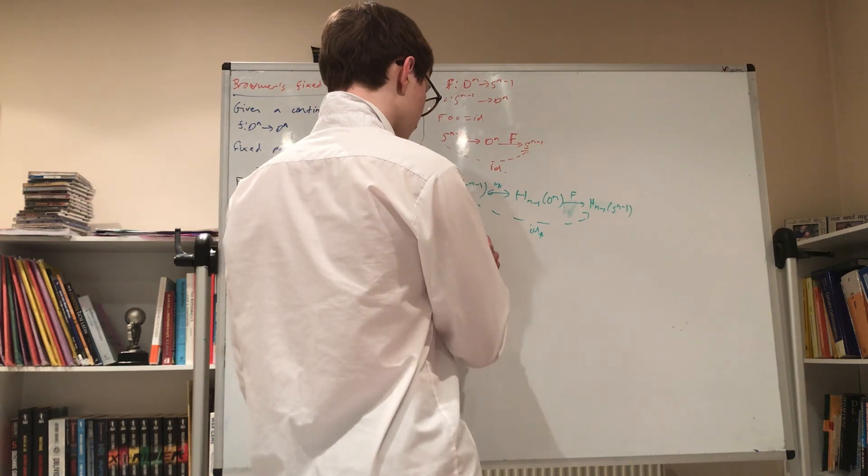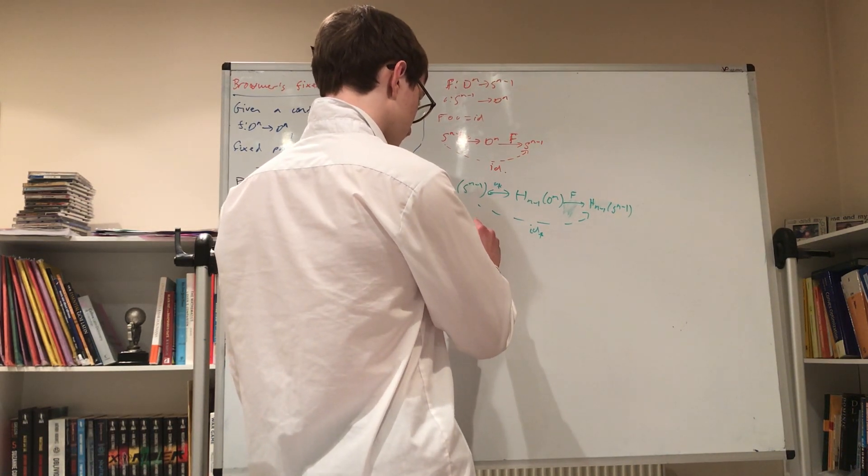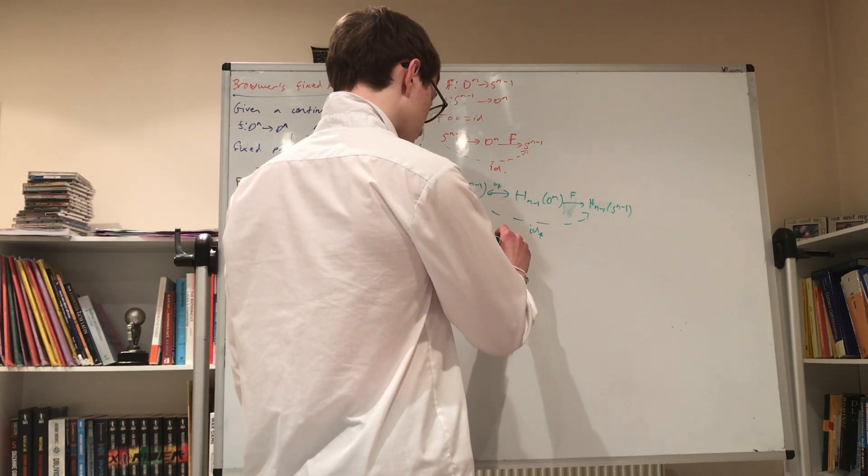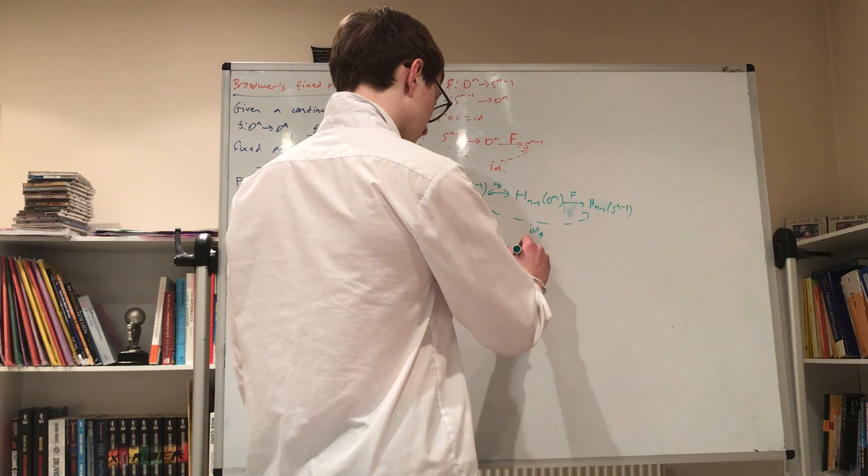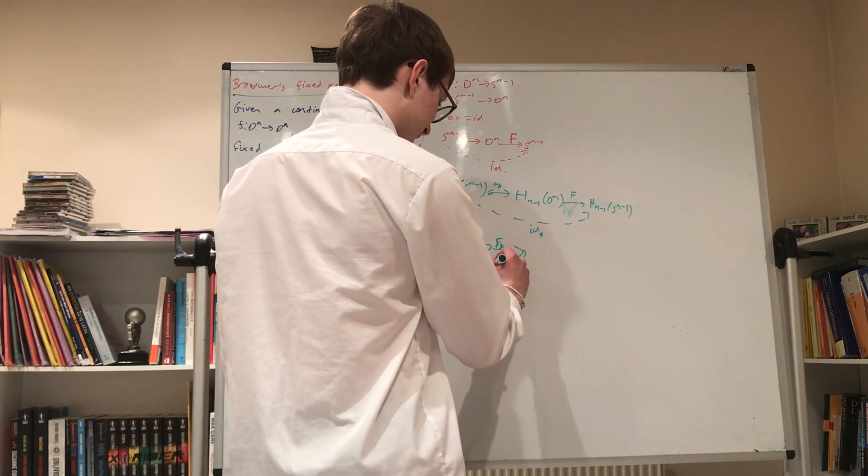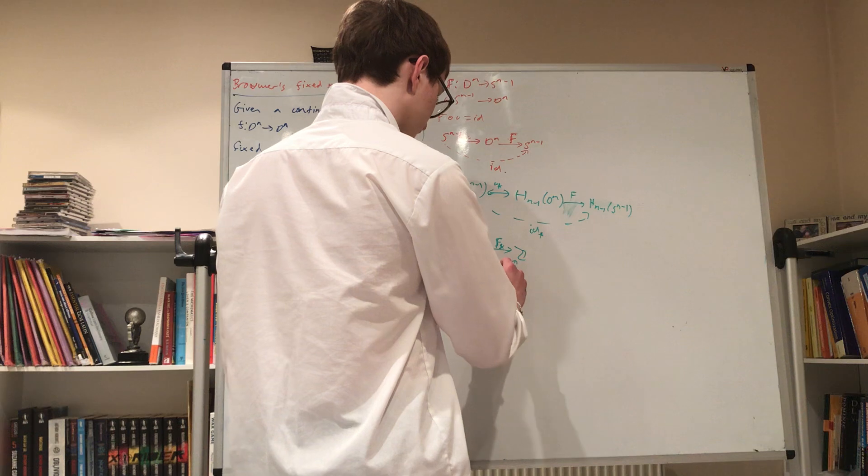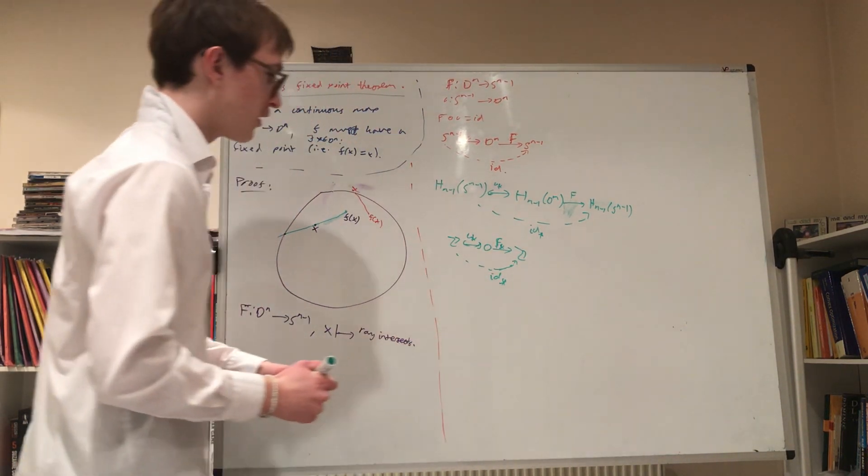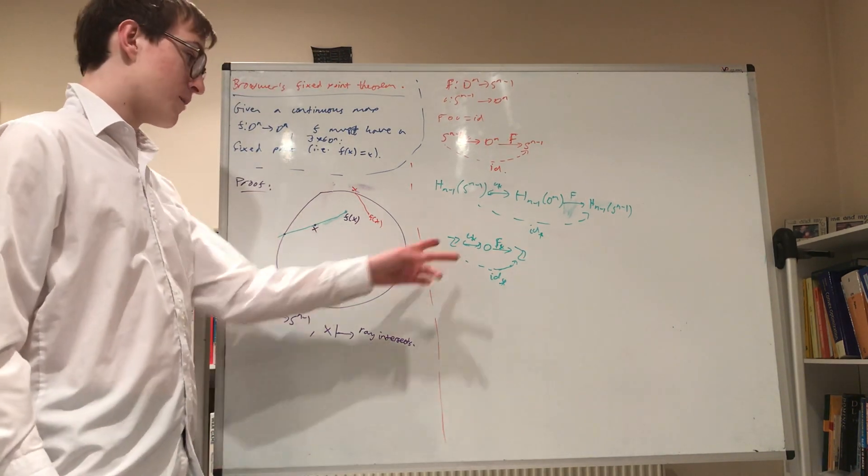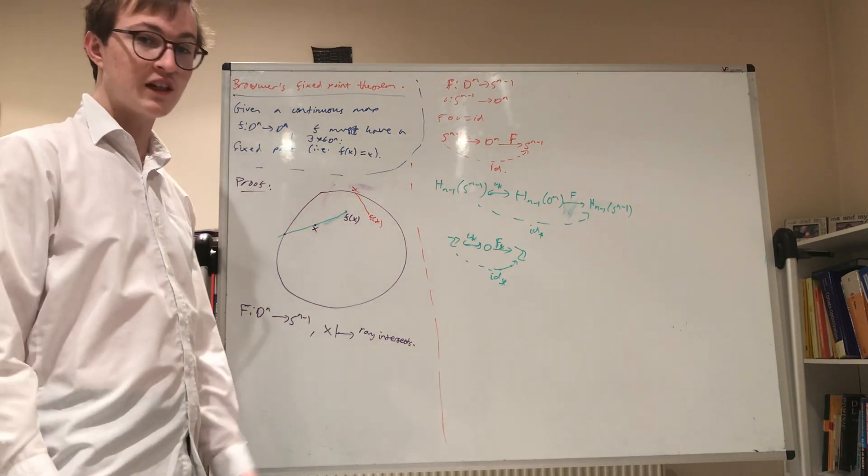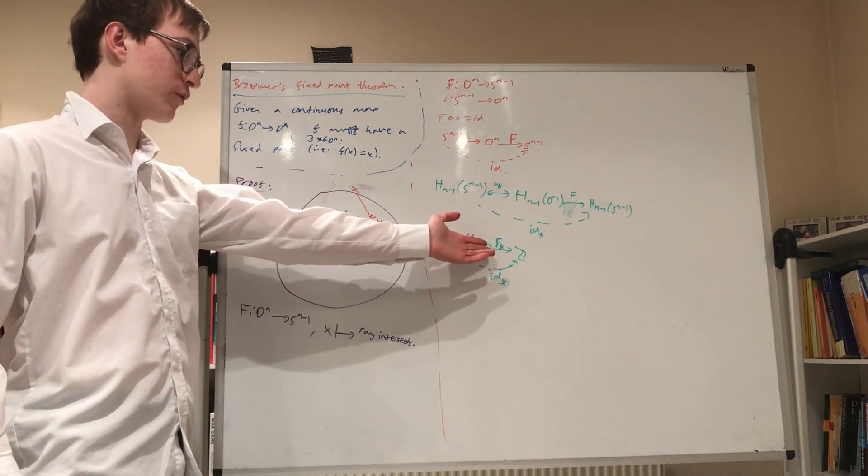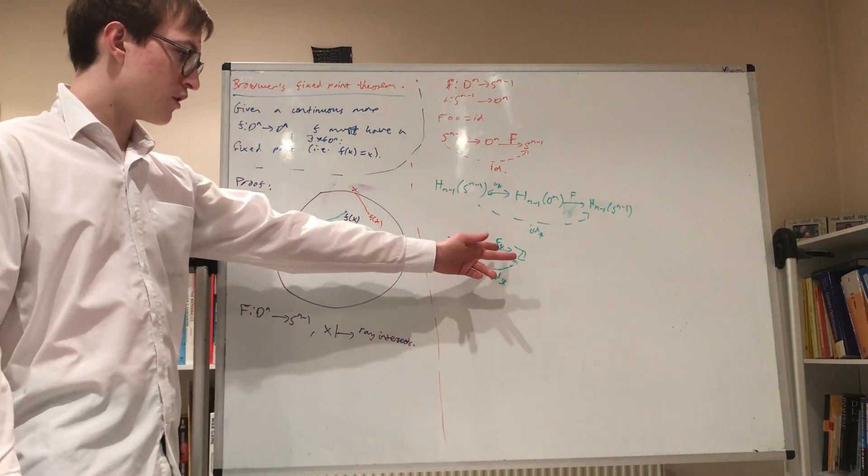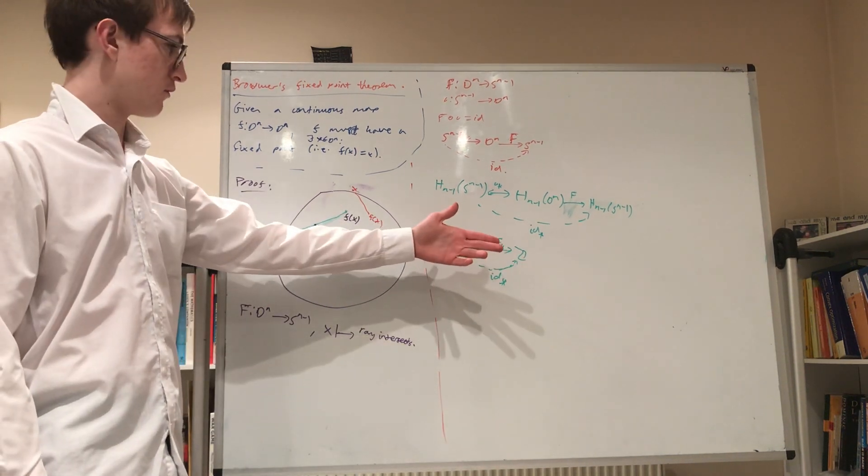So this is 0 and this is the induced map under the inclusion and this then goes via the induced map under f back to the integers. And this, I believe, would just be the identity, but the point is it's a non-zero map. So I'll just call it the map induced by the identity. But what do we know about a map factoring through 0? That's not possible. We cannot factor a map through 0 like this. It just does not work. And therefore, the existence of such an f is not possible.